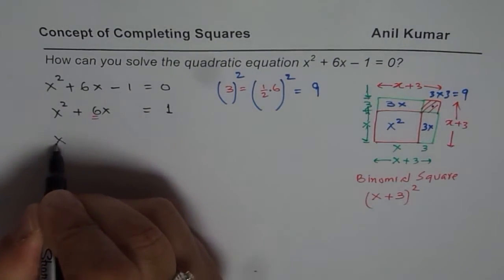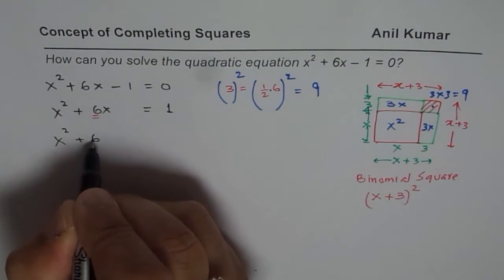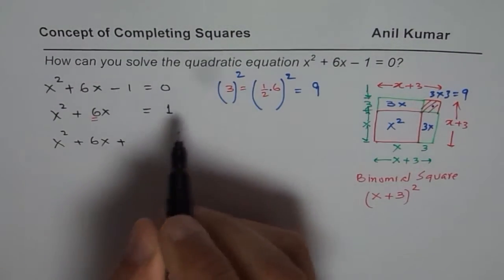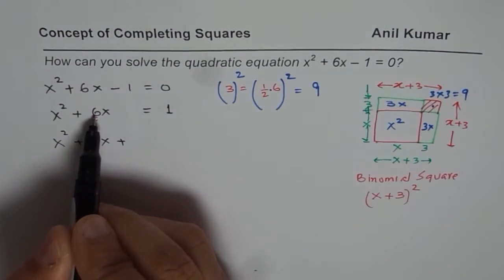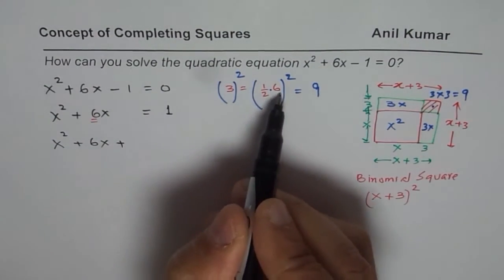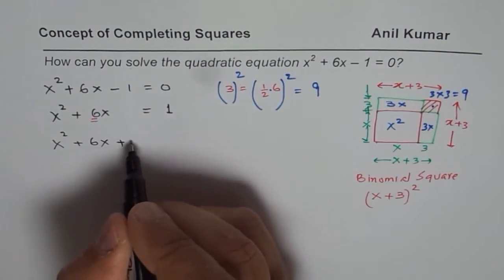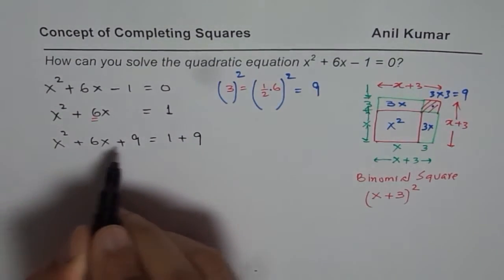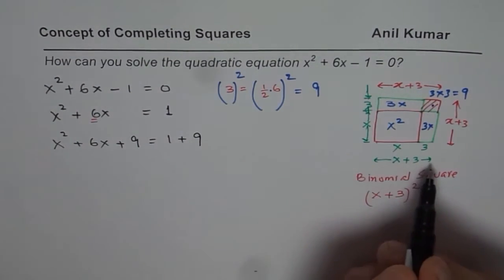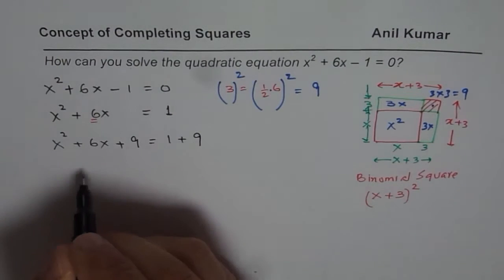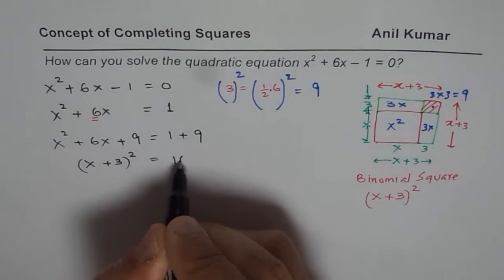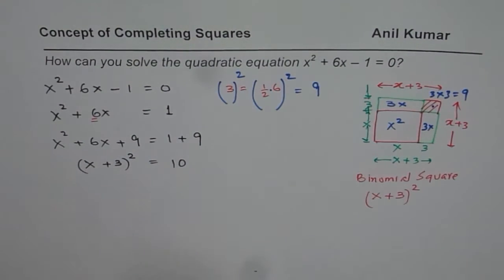Now let's continue. What we will do here is, we will add this area of 9. In this case, how do we get 9? Half of 6 square. Half of 6 is 3. 3 square is 9. So we will add 9 on both sides. Left side, you can see, is a perfect binomial square, which I could write as (x + 3)² and that is equals to 9 + 1, 10.